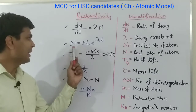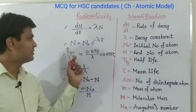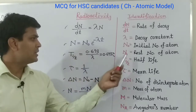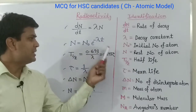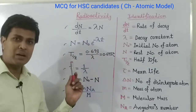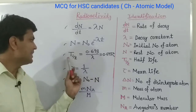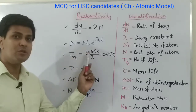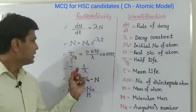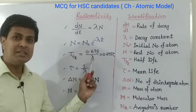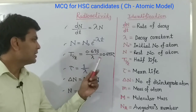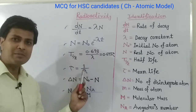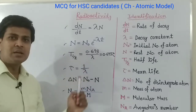The second formula is N equals to N naught e to the power minus lambda t. This formula is very important. Here N is the number of remaining atoms, N naught is the initial number of atoms, and t is the time. The third formula to calculate the half-life is t half equals to 0.693 divided by lambda, or equivalently t half equals to ln 2 divided by lambda, where lambda is the decay constant.